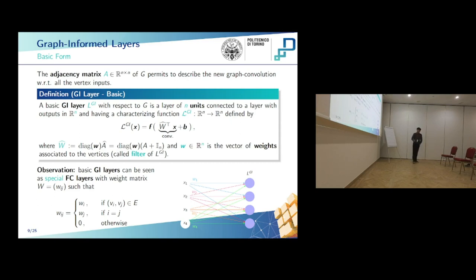You can see here an example: a special fully connected layer where we have removed connections if the edge doesn't appear in the graph, and moreover we have a parameter-sharing property. So we have only N — in this case 4 — parameters instead of the N-squared parameters typical of fully connected layers.